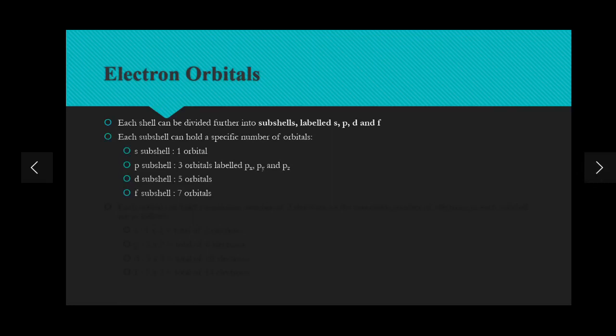Each subshell can hold a specific number of orbitals. The s subshell contains only one orbital. Every shell has three p orbitals except for the first shell, because it only contains one orbital — the s orbital. The p subshell contains three orbitals labeled px, py, and pz. We discussed previously that p orbitals are dumbbell-shaped, occupying the x, y, and z axes.